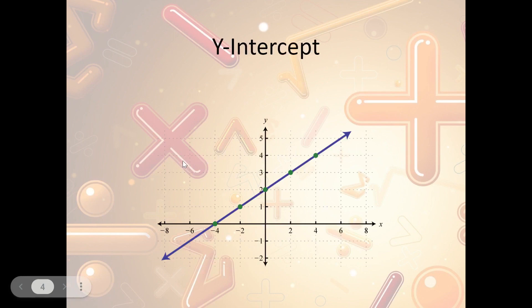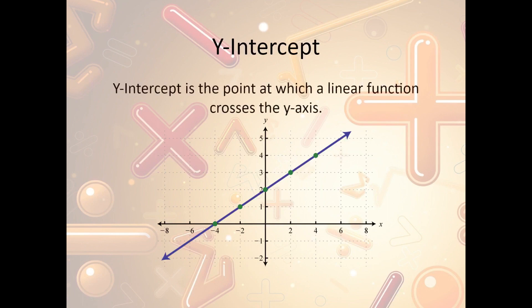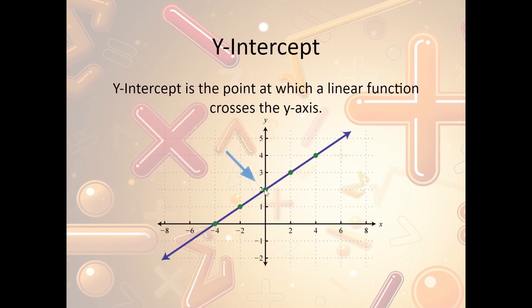The next part you need to know is the y-intercept. The y-intercept is the point where the linear function crosses the y-axis. So we have a line here, and we can see that the y-axis goes here. Where do they intersect? They intersect right there — that is what we call the y-intercept. So in this case, our y-intercept would be 2.